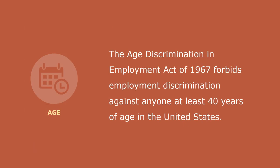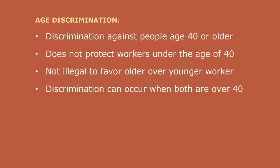The Age Discrimination in Employment Act of 1967 forbids employment discrimination against anyone at least 40 years of age or older in the United States. Known as the ADEA, it forbids age discrimination against people who are age 40 and older. It does not protect workers under the age of 40, although some states have laws that protect younger workers from age discrimination. It is not illegal for an employer or other entity to favor an older worker over a younger one, even if both workers are over age 40. Discrimination can occur when the victim and the person who inflicted the discrimination are both over age 40.